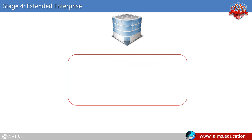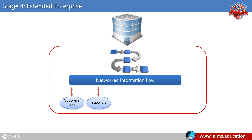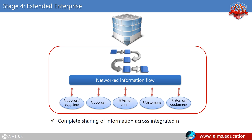In stage 4, the extended enterprise, the firm integrates its internal network with the internal networks of supply chain partners in order to improve efficiencies, product or service quality, or both. This structure allows complete sharing of information across integrated networks, and team building and planning across corporate boundaries.